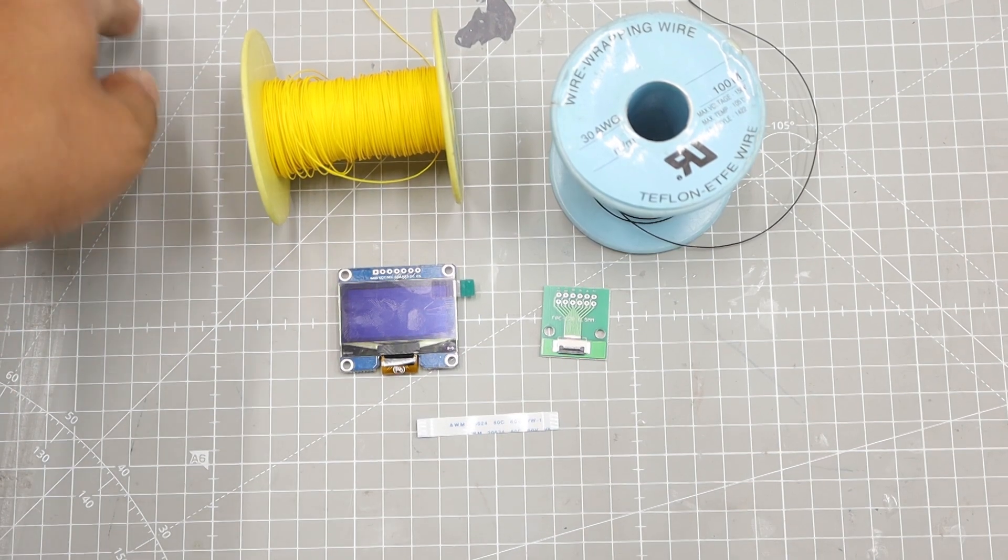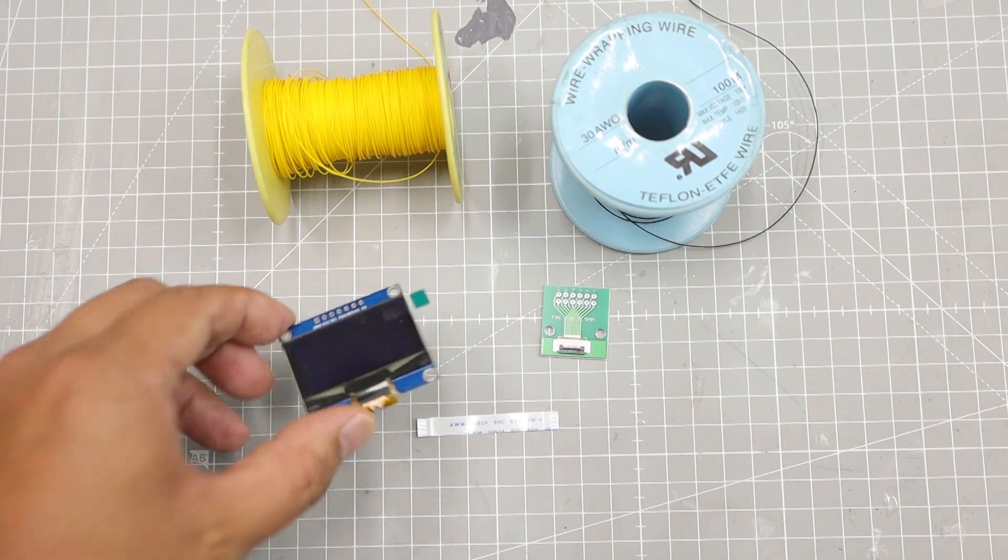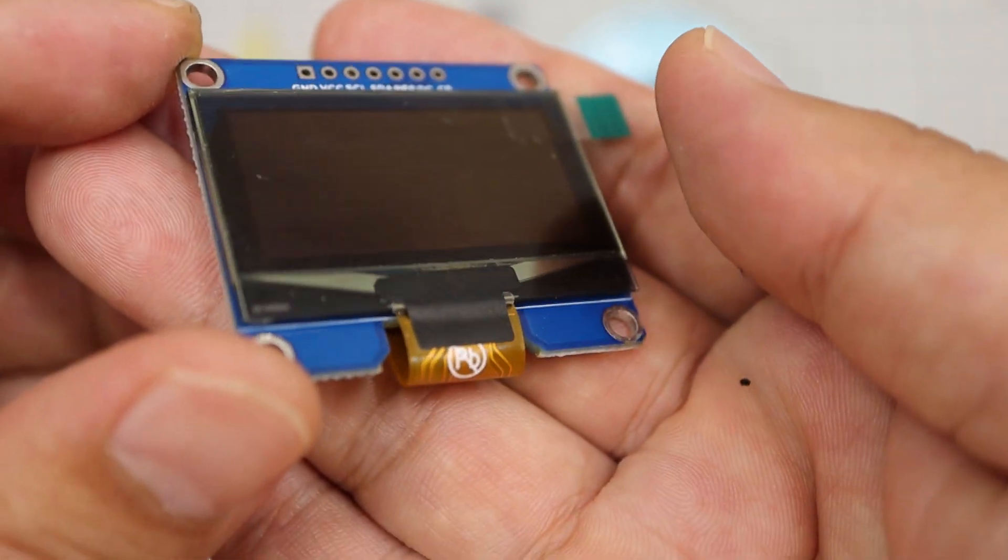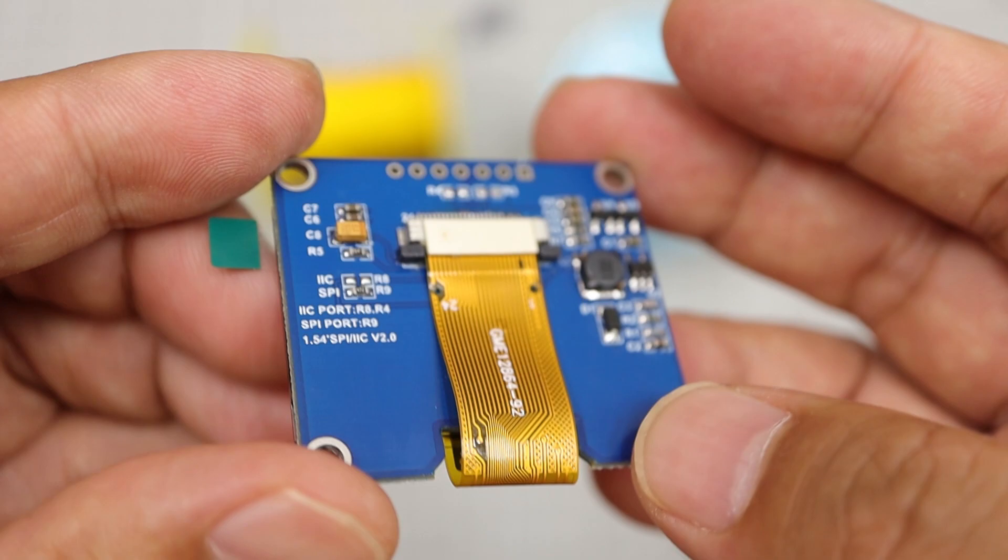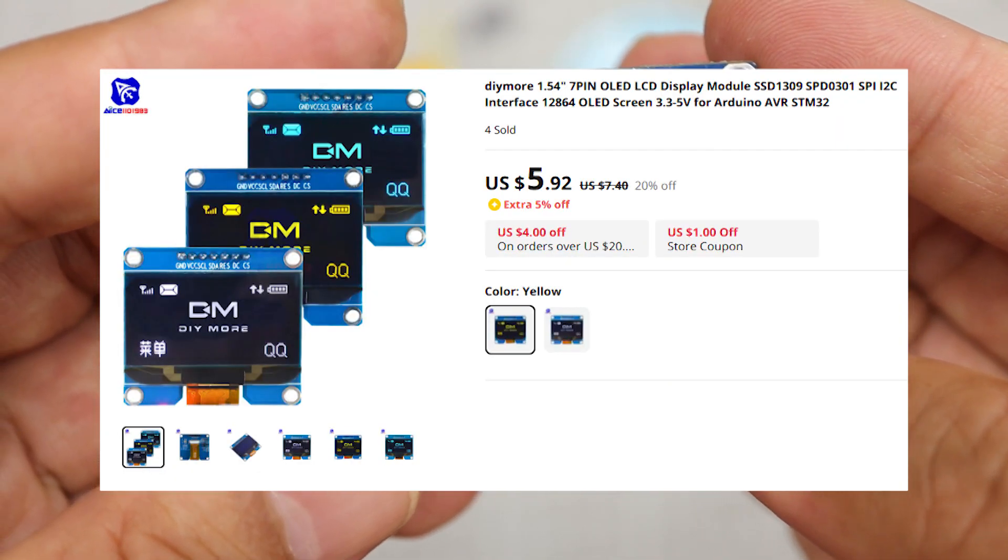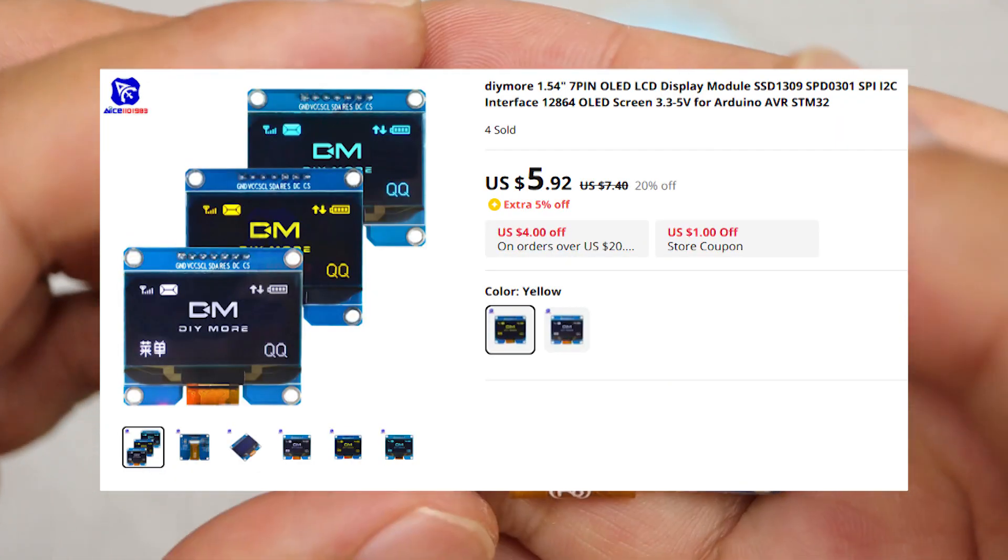Let's begin the mod. This is the part for the mod: 1.54 inch OLED. You can choose one of four colors: yellow, white, green, and blue. And buy one without solder pins.